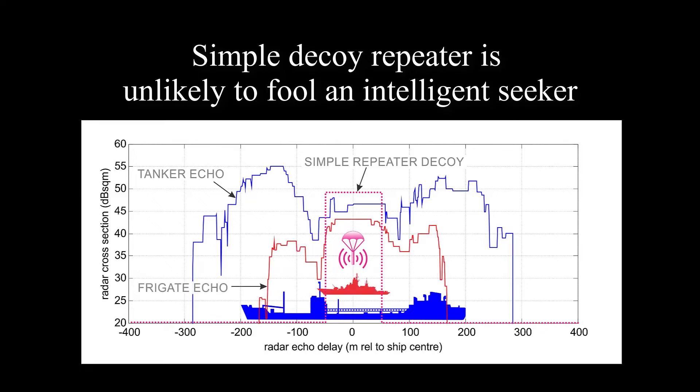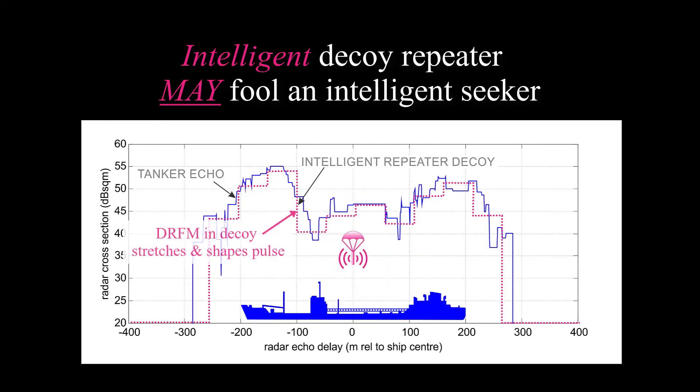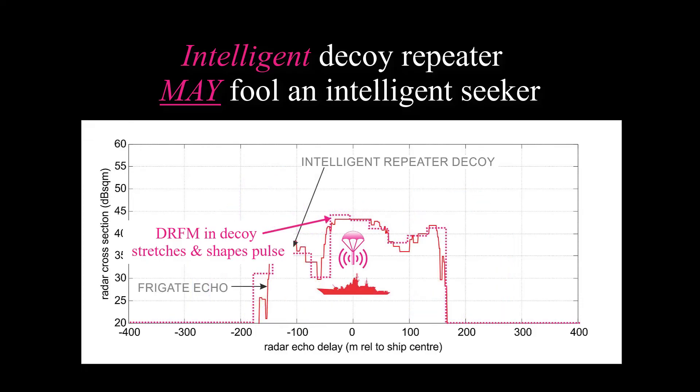Now as I said, this does have a pretty straightforward fix. The off-board jammer could stretch and shape the pulse that it sends back so the pulse looks to the seeker like it came from a ship, and maybe even a specific kind of ship.